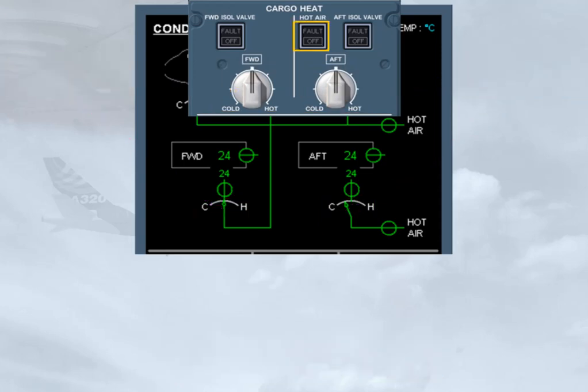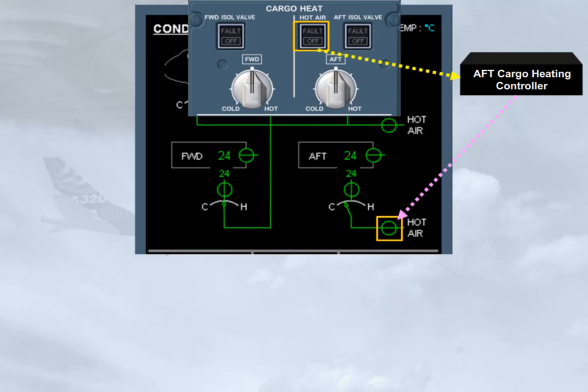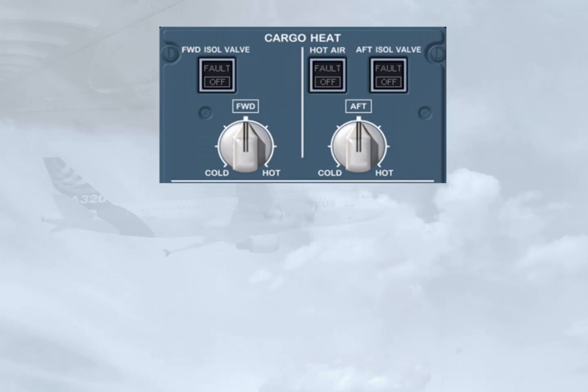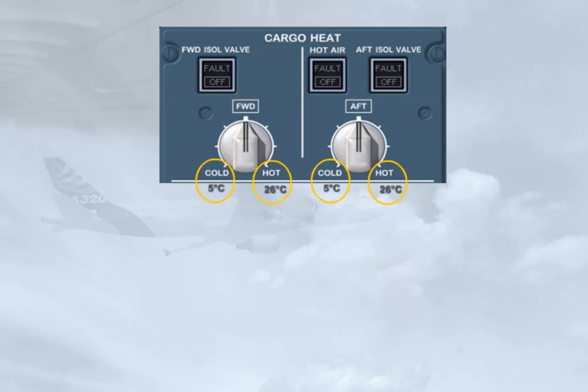The hot air push button switch controls the aft cargo pressure regulating valve via the aft cargo heating controller. This push button switch normally remains in the lights-out auto position. The normal operation of the cargo conditioning system only requires the following pilot inputs: confirm that the push button switches are in their normal lights-out position and set the required temperatures. Note: the mid position of the temperature selector is approximately 15 degrees Celsius.